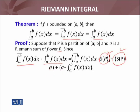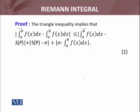Then I will take the absolute value and use the triangle inequality. The triangle inequality implies that it's less than or equal to |upper integral - S(P)| + |upper sum - σ| + |σ - ∫ₐᵇ f(x)dx|.